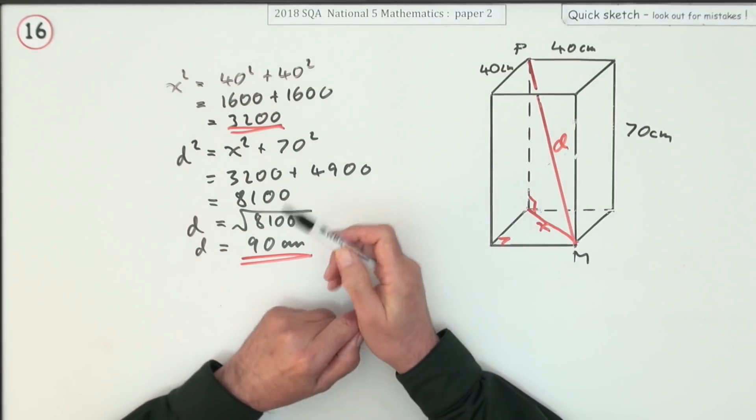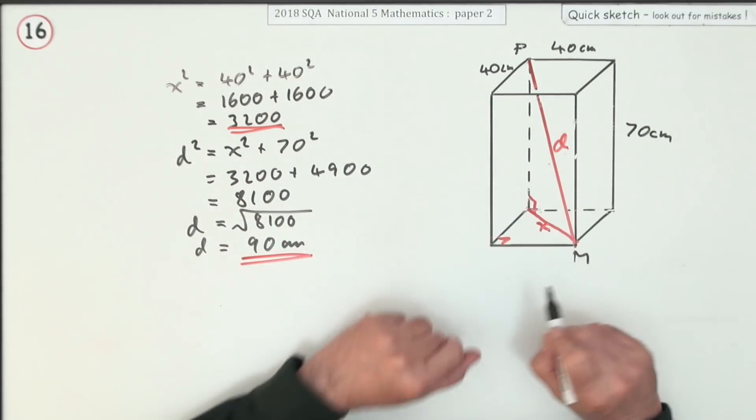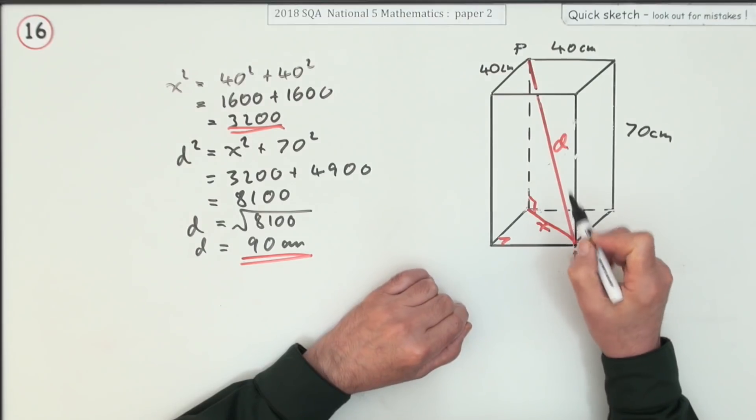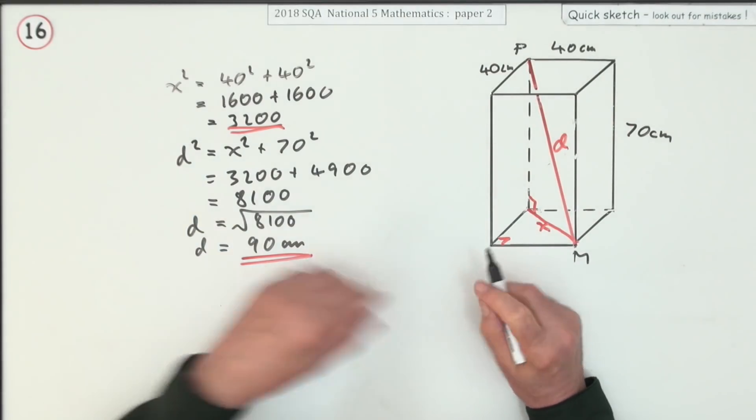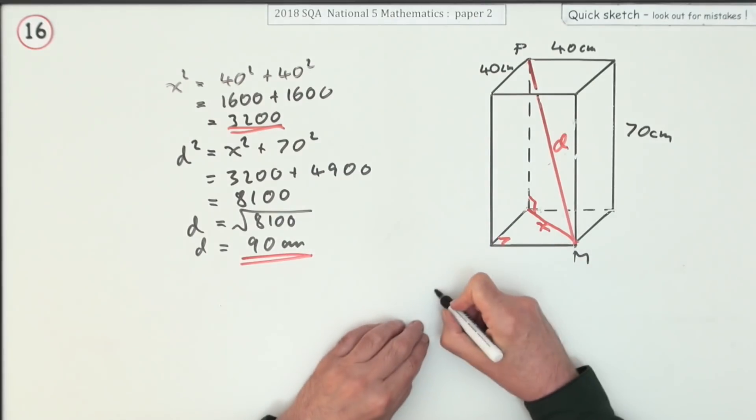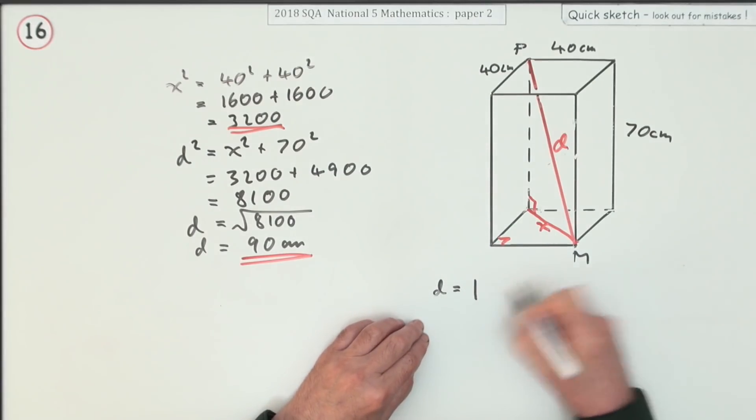Now you could have done that another way that saves a bit of writing, which is to say: well, d is the magnitude of the vector that goes from M to P, because that's essentially the calculation for the magnitude of a vector. So I could write d is actually the magnitude of the vector that goes from M to P.